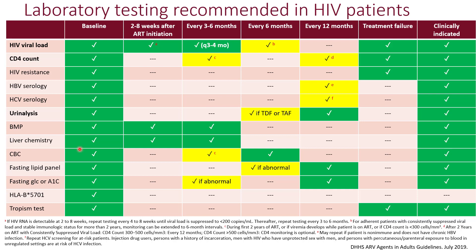Because HIV patients are at risk of cardiovascular disease, it's important to get a baseline fasting lipid panel and a fasting glucose or A1C so that any abnormalities receive appropriate treatment. If you are using abacavir, you need to obtain an HLA-B5701 test; if abacavir is not being used, this test is unnecessary. A tropism test is only needed if the patient is to be started on maraviroc — if maraviroc is not in the plan, this test is not required.